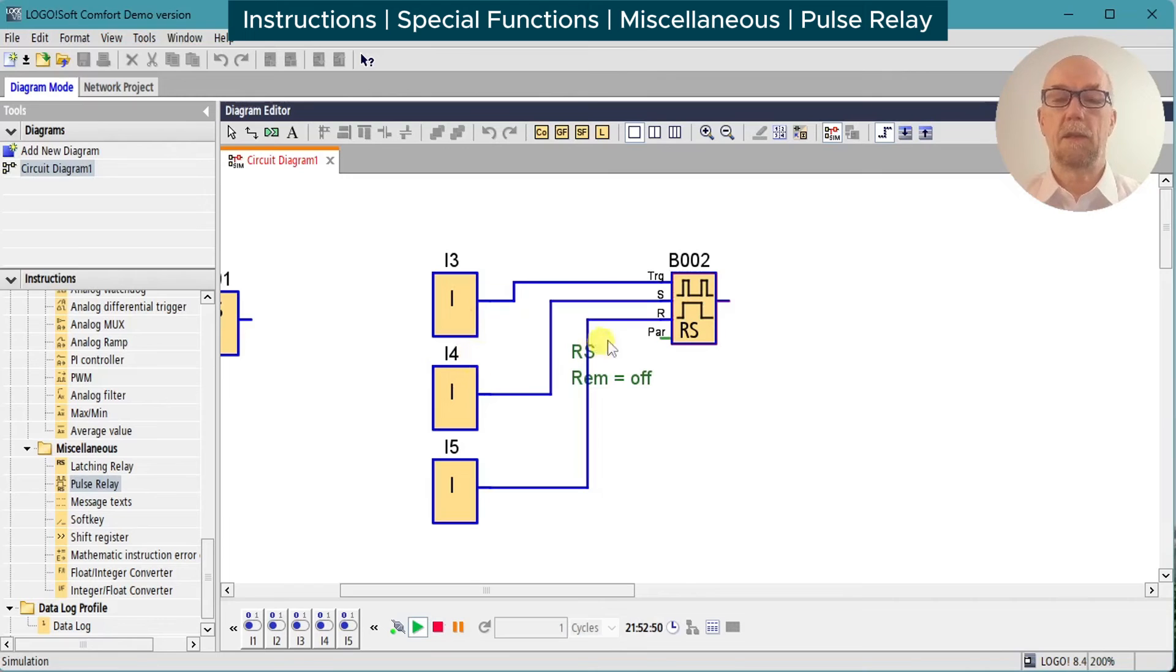We can combine that with the RS functions here. So if we turn on a set, it maintains the output regardless of what's happening on the trigger. If we do a reset, it remains in reset mode regardless of what happens to the trigger. Of course, with set and reset, the reset is winning in this case.